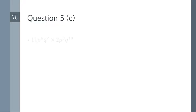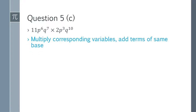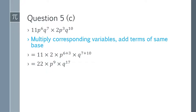Question 5c: 11p^6 q^7 multiplied by 2p^3 q^10. Multiply coefficients: 11×2 = 22. Add powers of p: 6+3 = 9, and powers of q: 7+10 = 17. The answer is 22p^9 q^17.